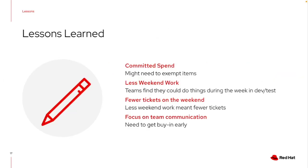There are lessons learned as you go through this. If you have a committed spend agreement with a cloud provider or reserved instances, you may dip below that threshold — so you can either exempt certain items or accept going below that threshold. We also found that less weekend work was occurring in development and test environments — projects were still completed on time, teams were just more efficient during the week. And because instances were turned off, we ran into fewer weekend tickets, meaning fewer support personnel and fewer on-call resources were necessary.